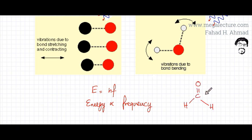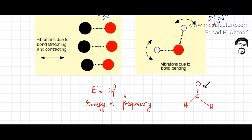For example, I have this molecule here. I have a C double bond O and two CH bonds. Now this C=O would vibrate differently — it would have different energy requirements when vibrating, so different frequencies are going to be absorbed by this C=O. This CH bond would be absorbing different frequencies when it needs to vibrate. These two CH bonds are identical, so they look exactly the same.